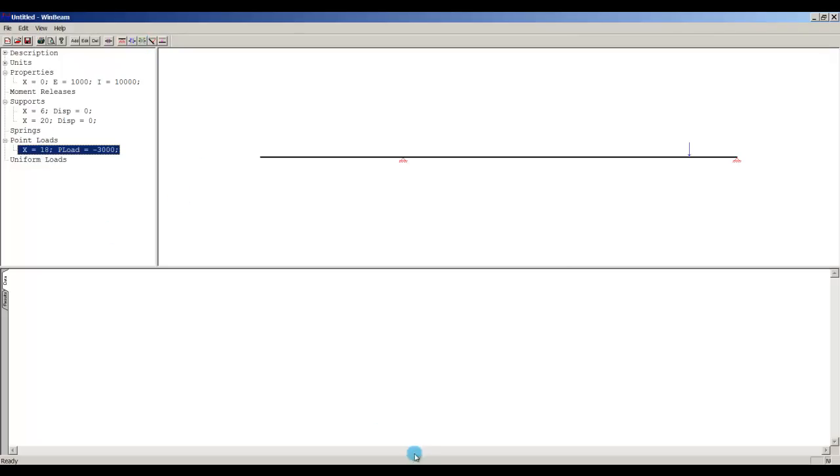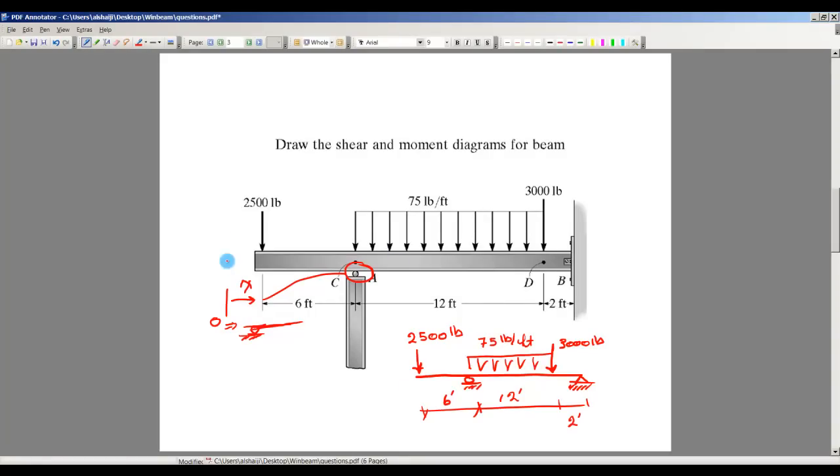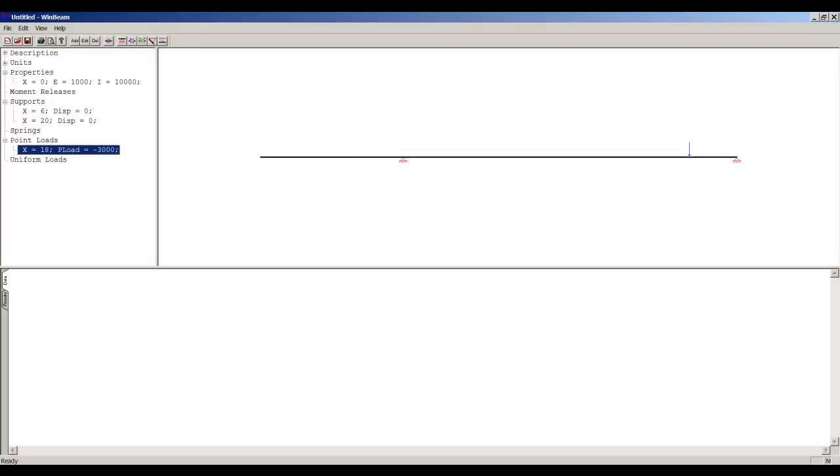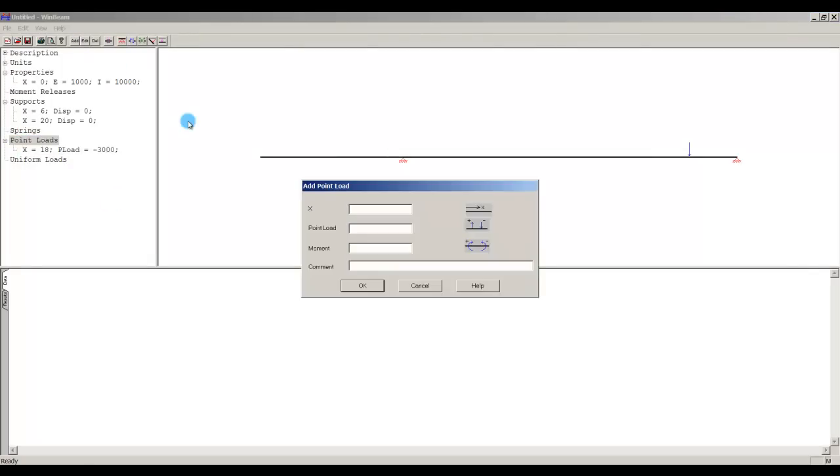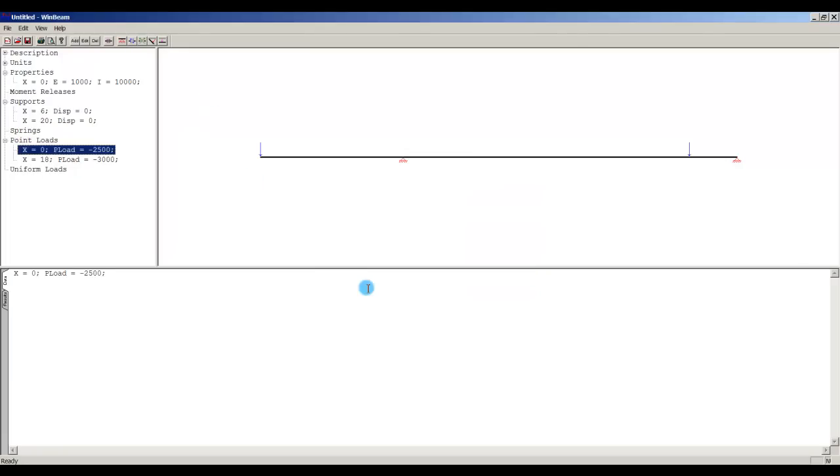Any other point loads? No. Any other point loads? No, but I do have a point load which is at x equals 0, which is 2500. So I go to point loads and at x equals 0 I'll have a load of minus 2500 like that.